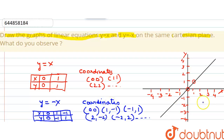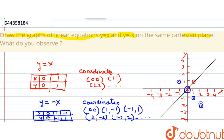The origin is common for both graphs. Plotting the points: the origin first, then (-1, 1), then (1, -1), and then (2, -2). These points are placed on the Cartesian plane.